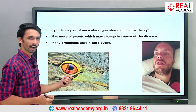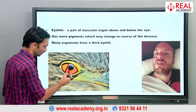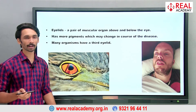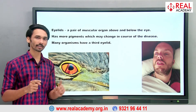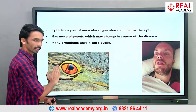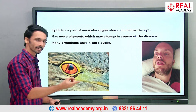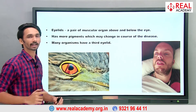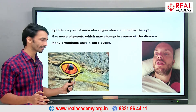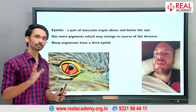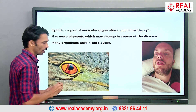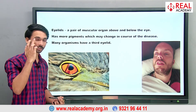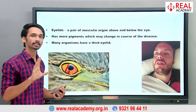Many organisms have a third eyelid — for example, the nictitating membrane present over an eagle. This membrane is transparent and can be flapped over the eye, so the eagle can still see while its eyes are protected from infections and dust. Whenever there is danger or an obstacle in front of them, they close their eyes with the nictitating membrane.